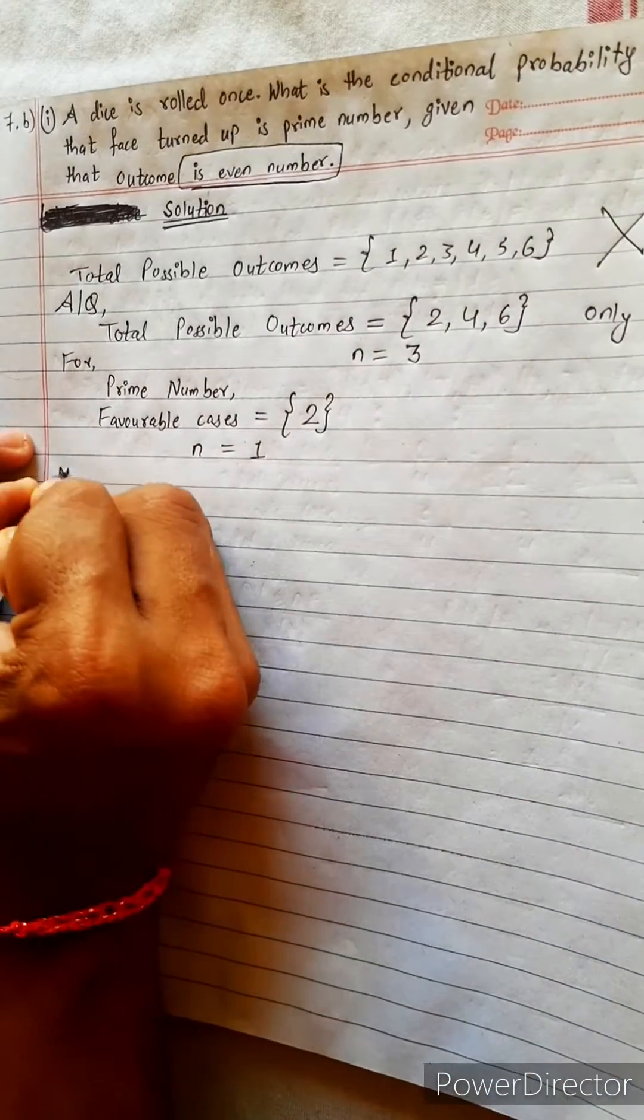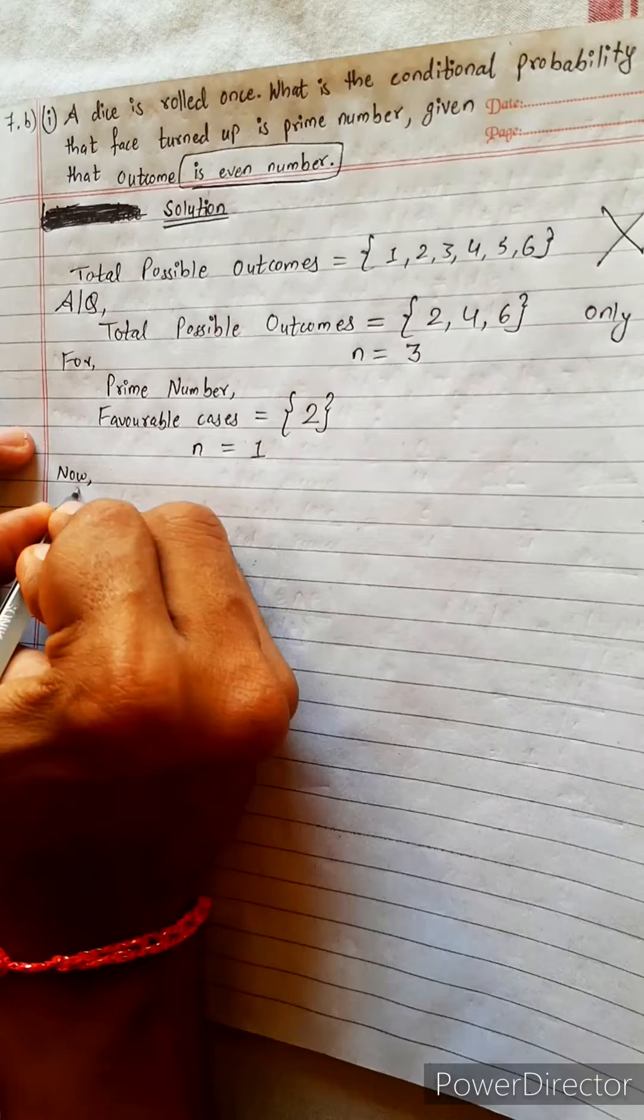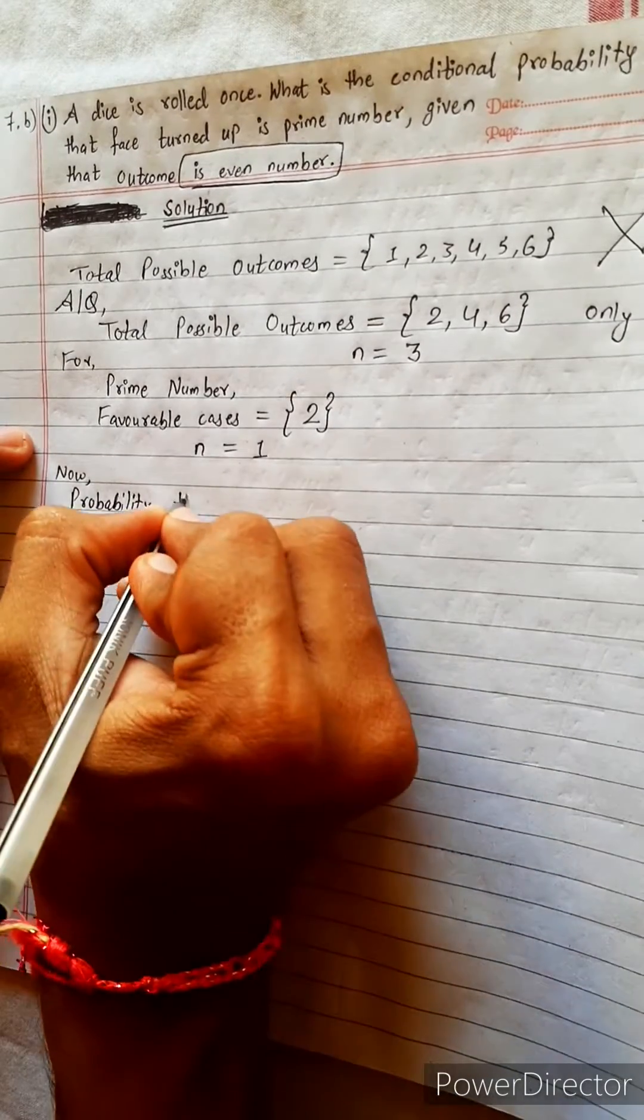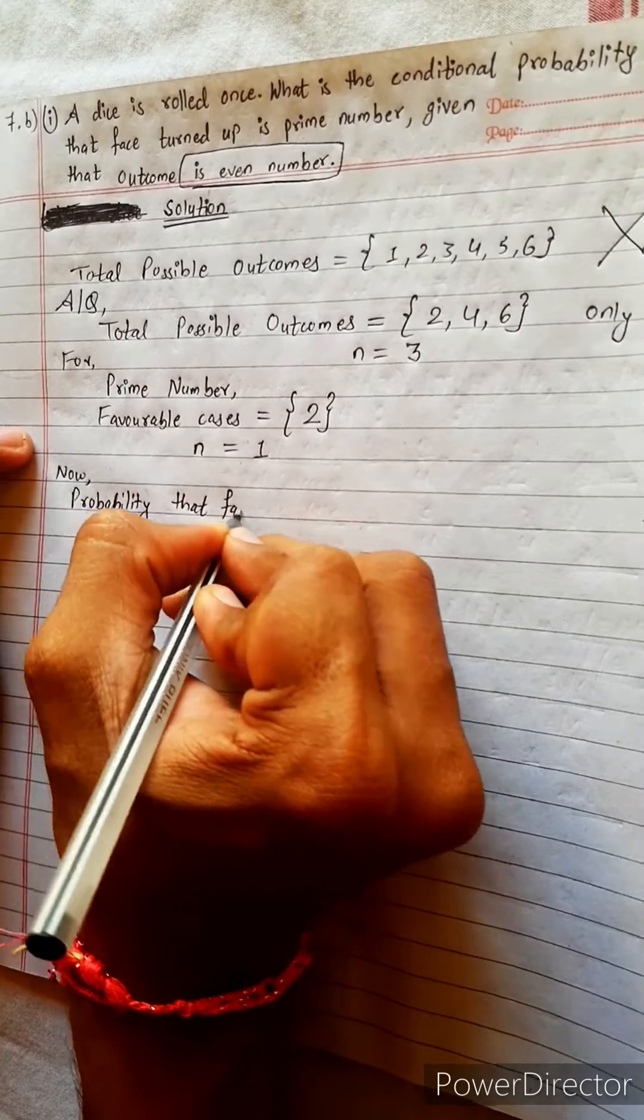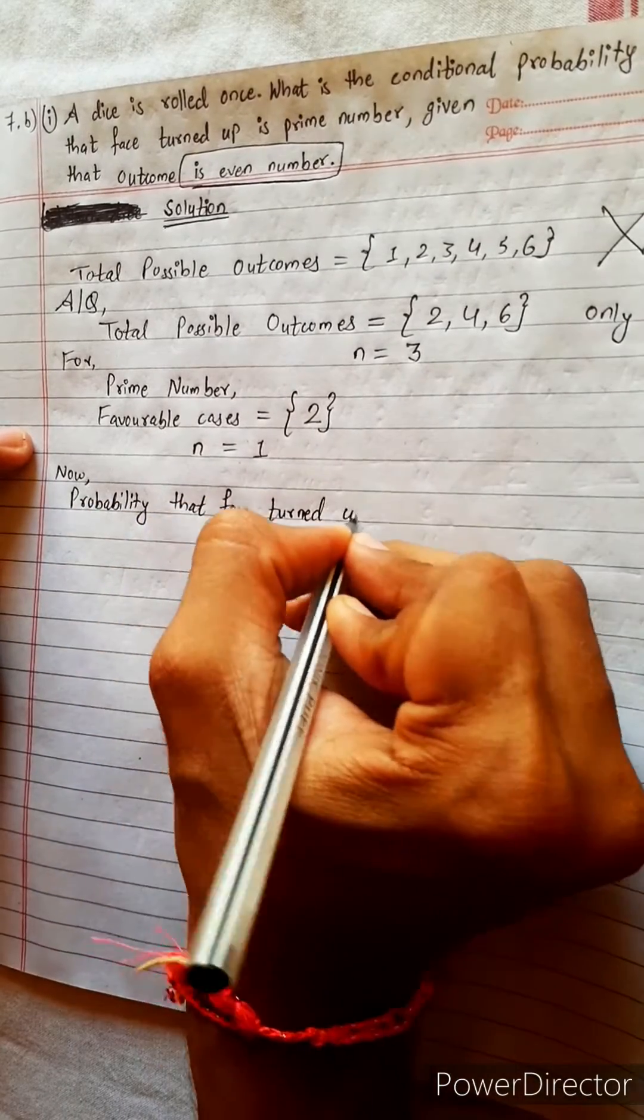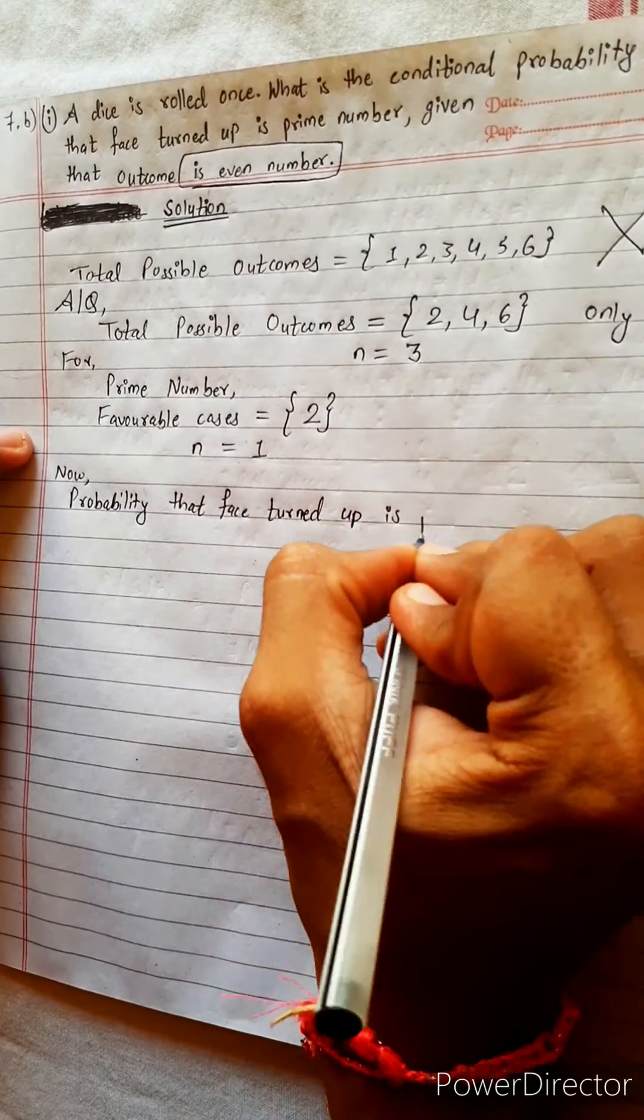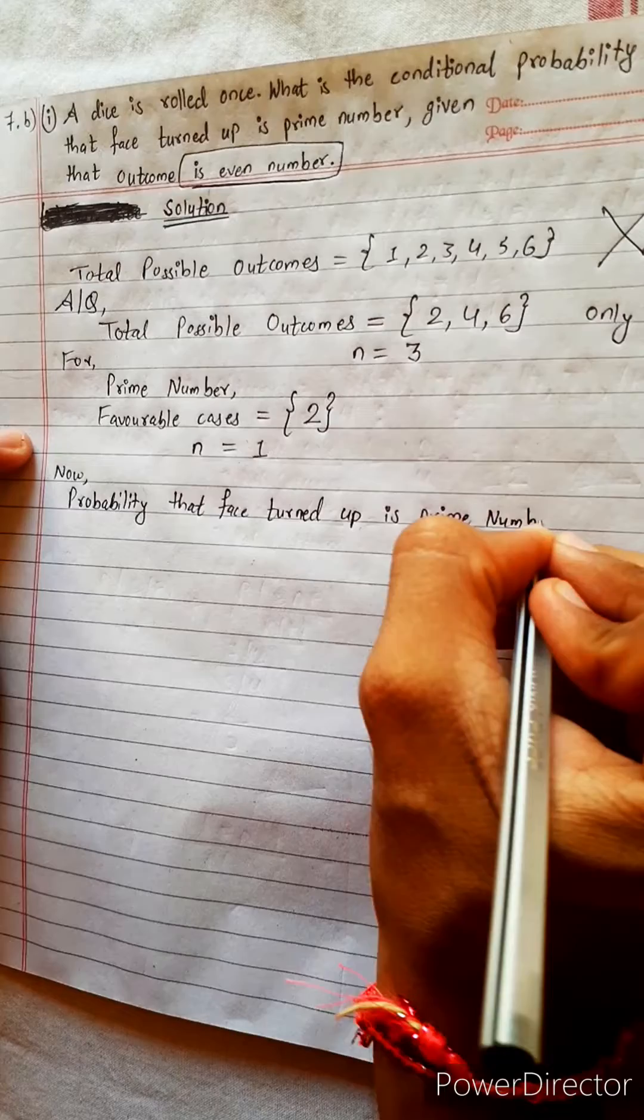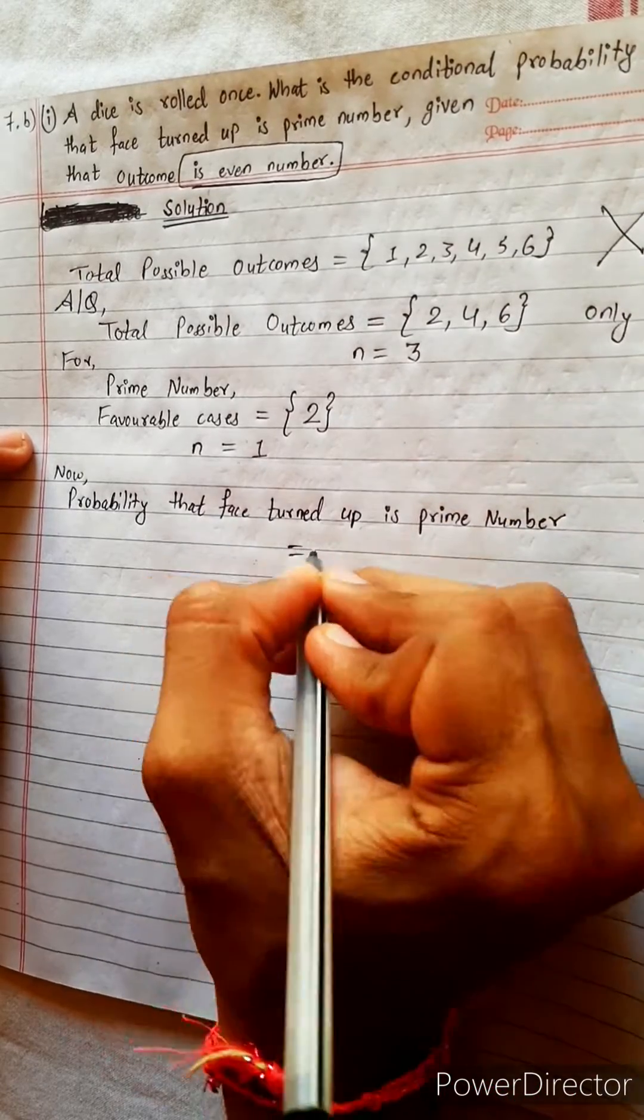Now, finally, conditional probability. Probability that the face turns up is a prime number. This is given by...